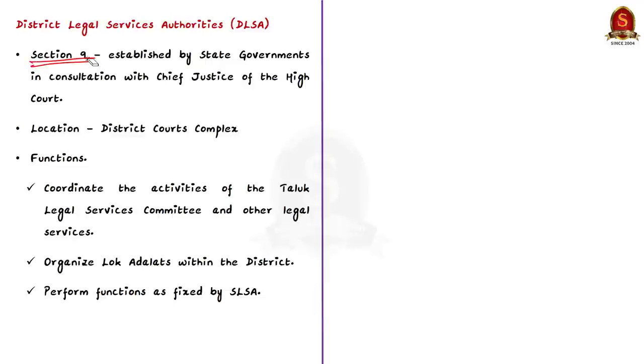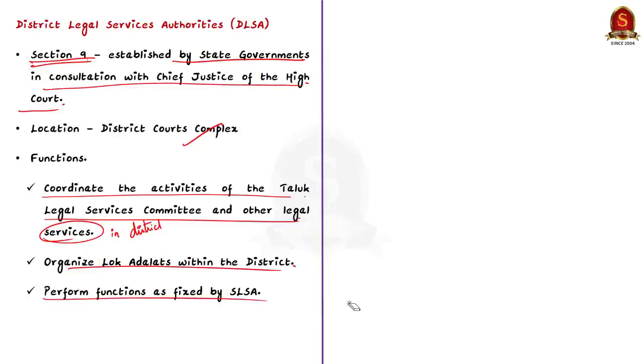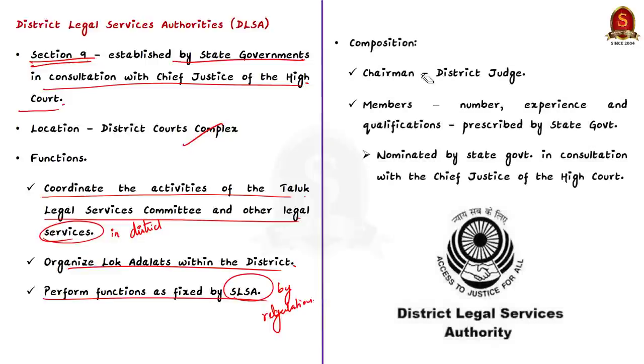It is established under Section 9 of the Act for every district in the state. DLSA is established by state governments in consultation with Chief Justice of High Court of the state. It is situated in district courts complex in every district. It has three main functions. First is to coordinate the activities of Taluk Legal Services Committee and other legal services in the district. Second is to organize Lok Adalats within the district. And finally, to perform any other functions as fixed by state Legal Services Authority through regulations. Now coming to its composition, know that it has a chairman, members and a secretary.